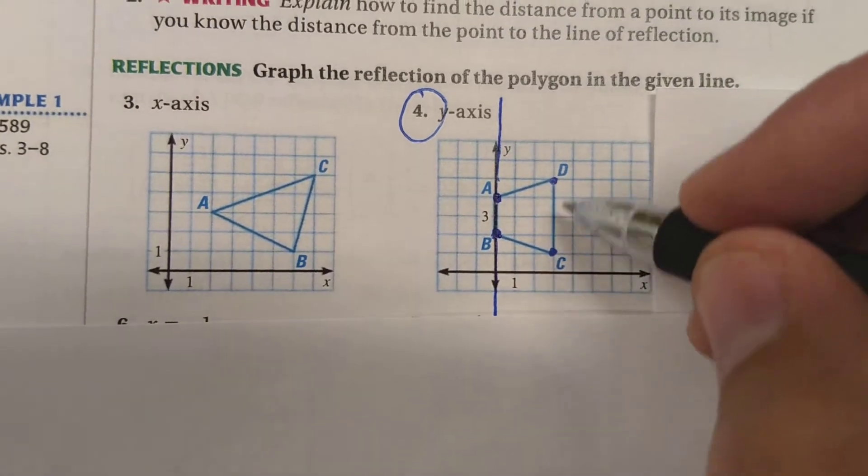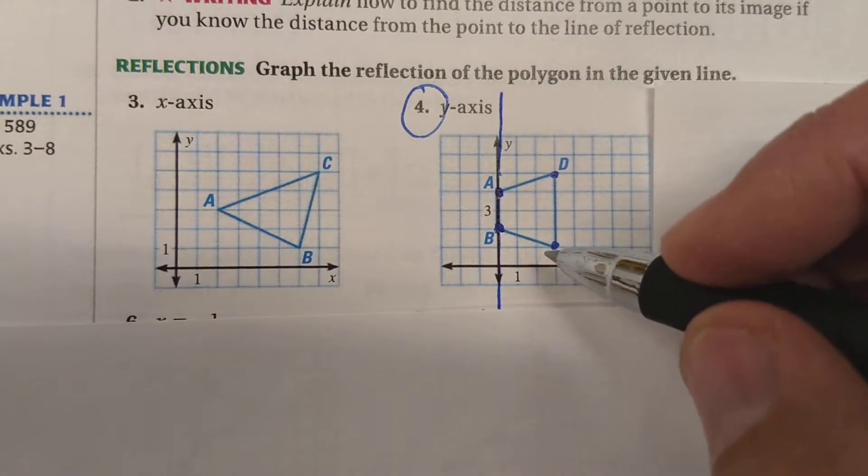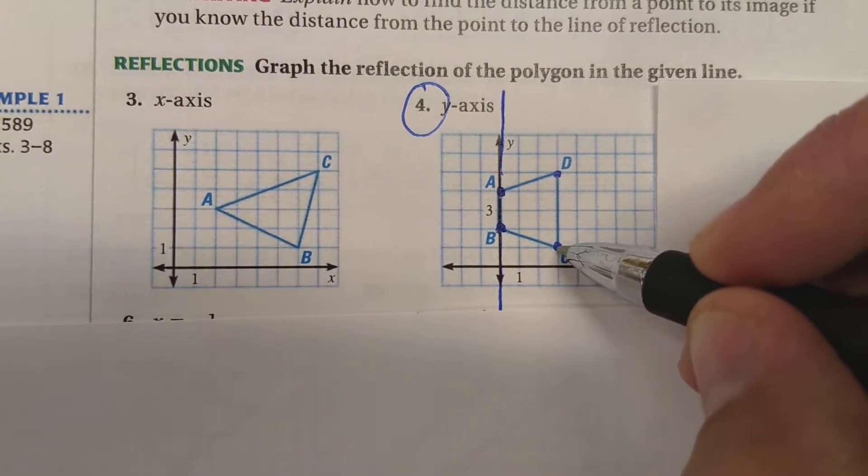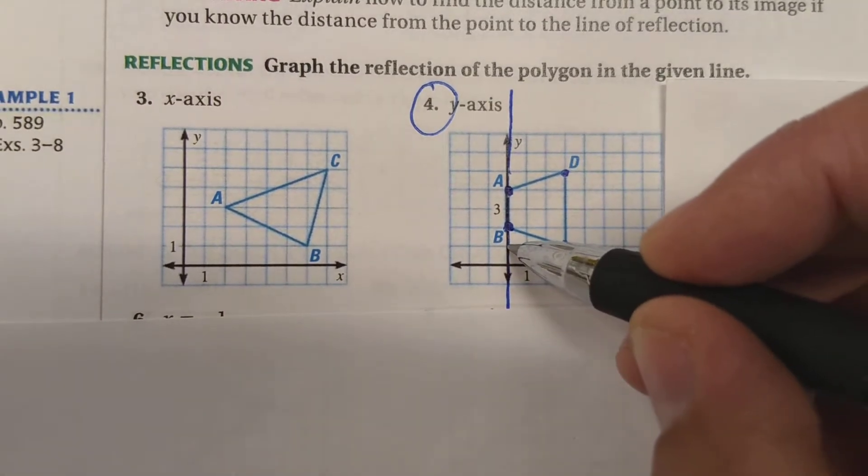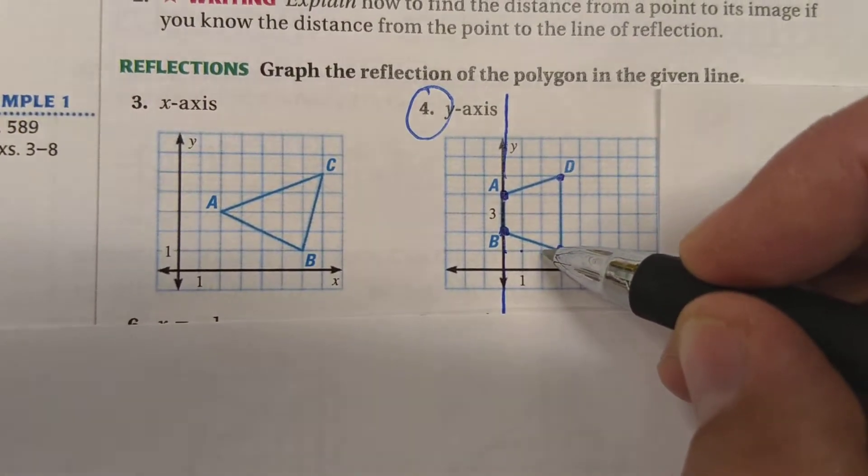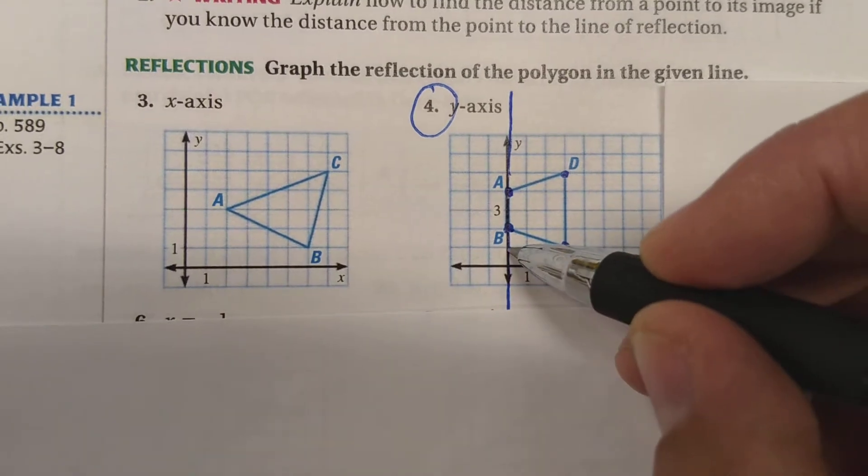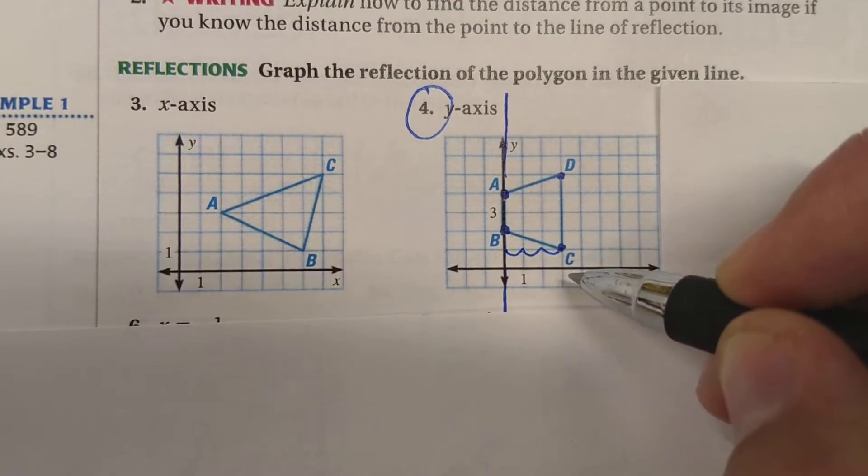However, C and D are going to be in different spots. What you can do is measure exactly how many units over C is from the line of reflection. In this case, it's one, two, three units over, straight out from the line of reflection.